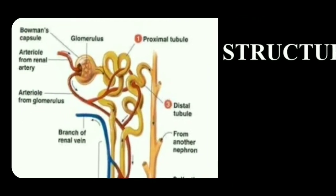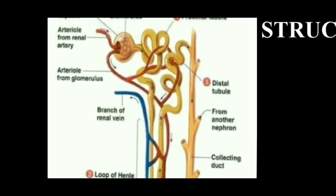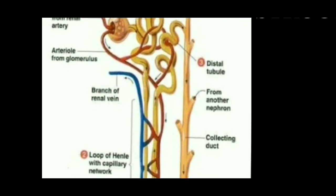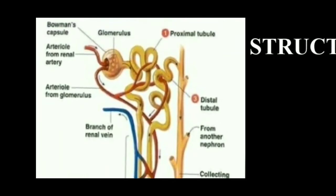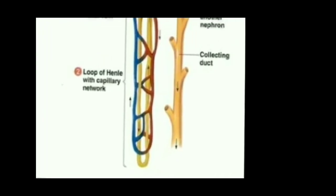There is also the distal convoluted tubule. Distal means somewhat far — it is a little far away from the Bowman's capsule, which is why it is called the distal convoluted tubule. These two — the proximal convoluted tubule and the distal convoluted tubule — are connected by a U-shaped pipe-like structure called the loop of Henle.